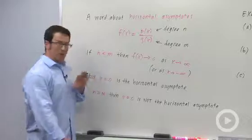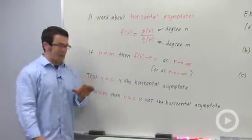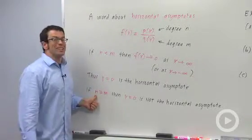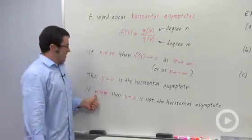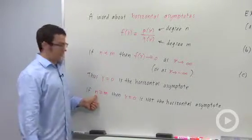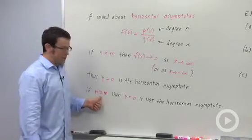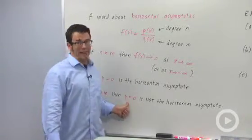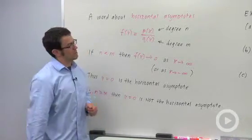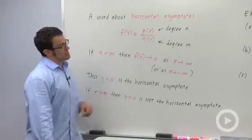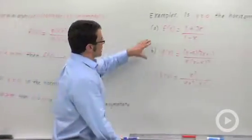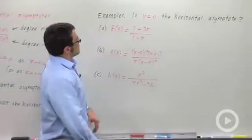Now it's very important that you know that if the degree of the numerator is not less than the degree of the denominator — if it's bigger than or equal to the degree of the denominator — then y equals 0 is not the horizontal asymptote. So let's take a look at some rational functions.